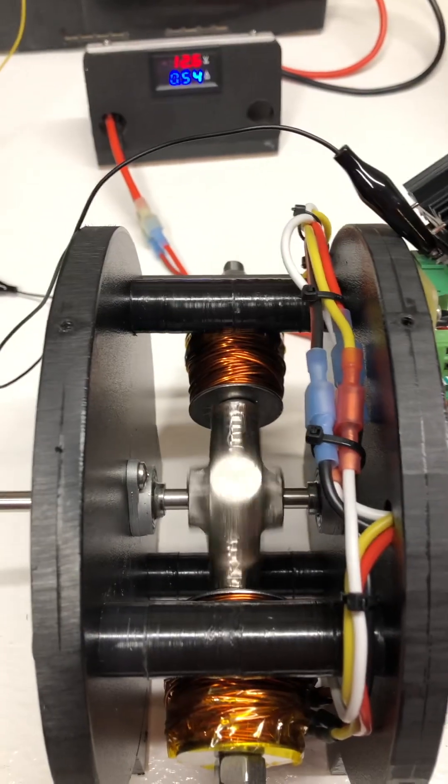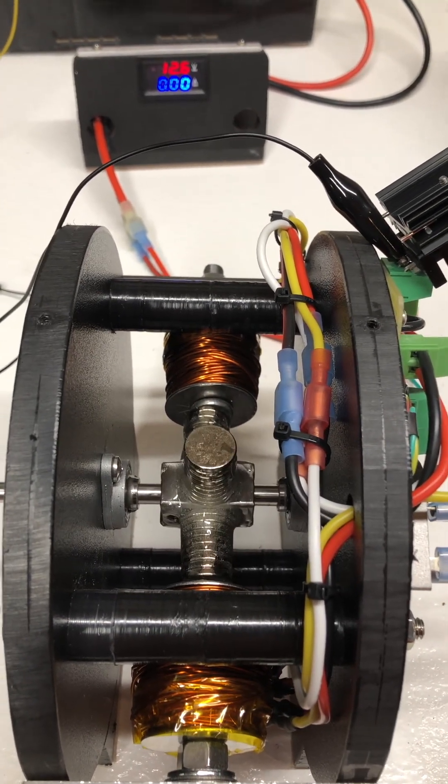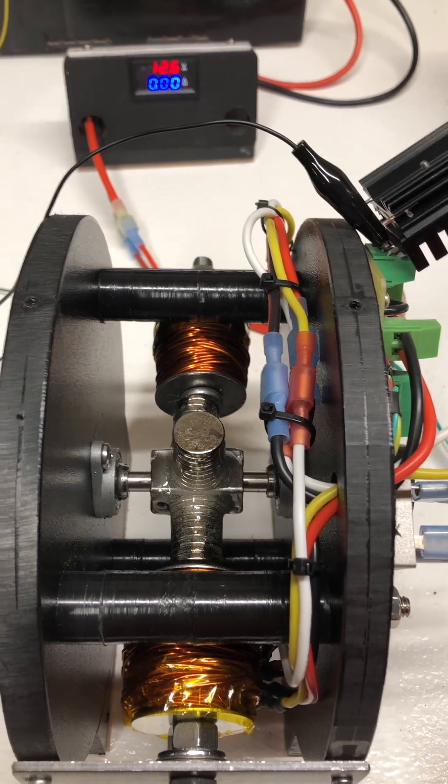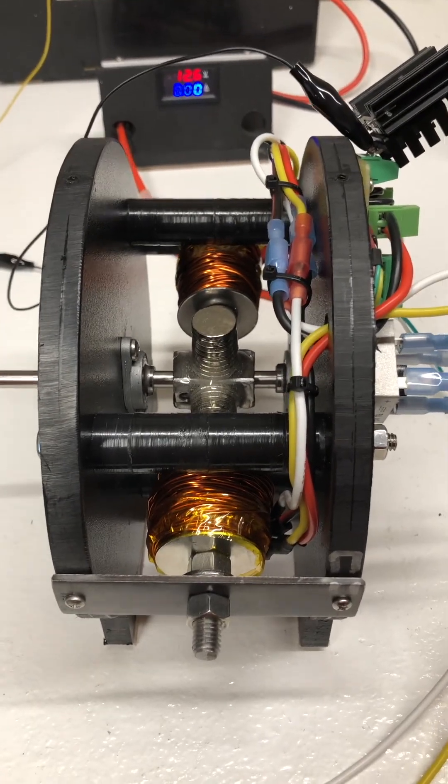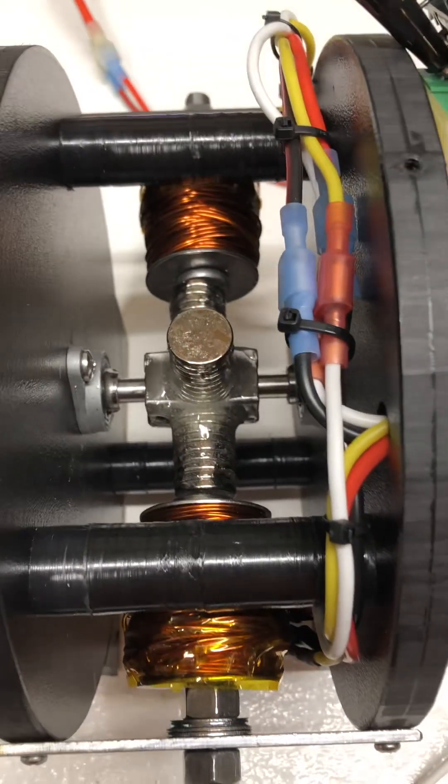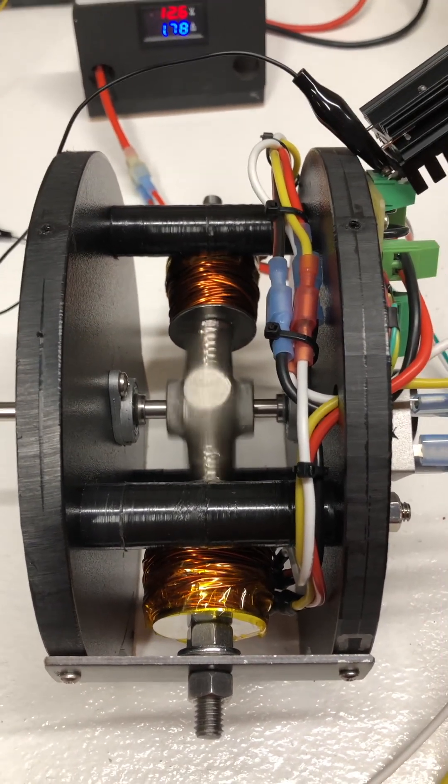The interesting thing about this motor is when you turn the power down so much, it just locks up. It has so much attraction to those steel electromagnets. And the electromagnets are actually big nails that I made into electromagnets. But yeah, you go about half power and it starts right out.